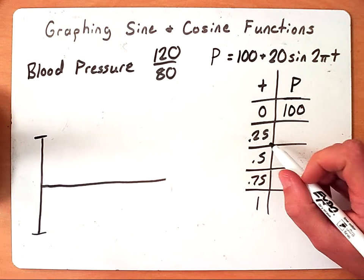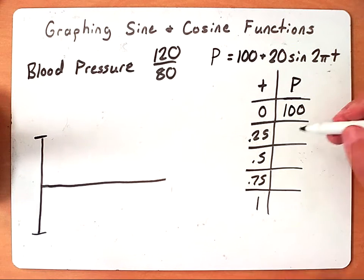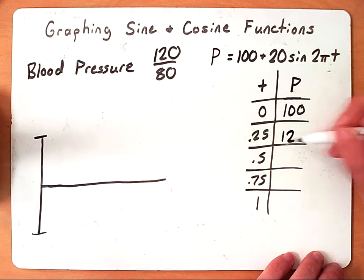As we move to 0.25, a quarter of a second, if we plug that in, we're going to see that their blood pressure rises to 120.